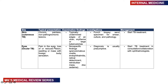Ocular TB can affect any part of the eye. Patients present with eye pain, reduced or lost vision, swelling or a mass, or a foreign body sensation. Examination may reveal granulomatous uveitis, endophthalmitis, retinal detachment, retrobulbar mass, or disc edema. Diagnosis is usually presumptive — refer early to an ophthalmologist and start TB treatment.